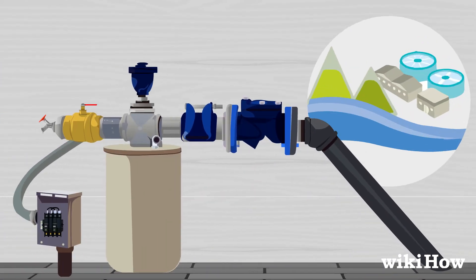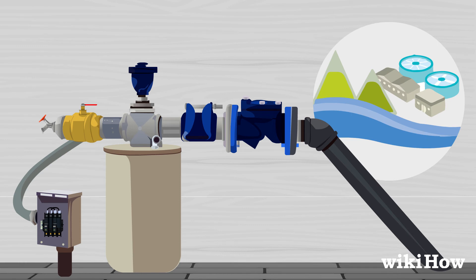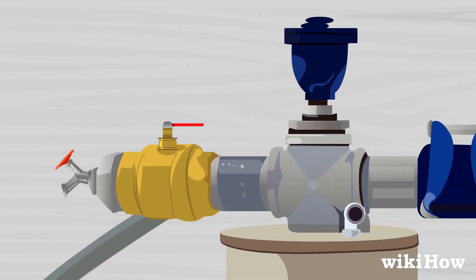If you get well water instead of municipal water, look for a ball valve, which looks like a lever, attached to the pipe above the water pump. Open it by turning it so it's parallel to the pipe.